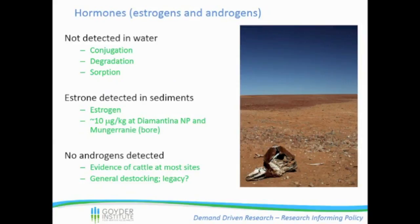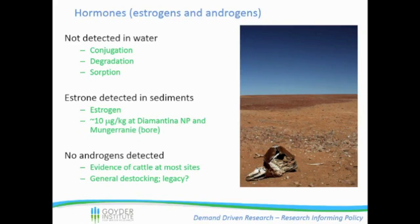In terms of our hormone analysis, we didn't detect any in water samples. This can be for a number of reasons - for example, they could be degraded, they could be bound to sediments. We did detect an oestrogen, oestrone, in sediments at Diamantina National Park, which kind of lined up with what we saw with the cattle - although most of these cattle are bulls and we didn't find any androgens anywhere. So that kind of killed that theory. However, we did see evidence of cattle at most sites, and even though oestrone is an oestrogen, androgens can be degraded to form oestrone. So it's possible that this might be a legacy of cattle being in this site, associating with the sediments and we're picking it up. But this obviously needs a lot more work before we can definitively say there was an impact.